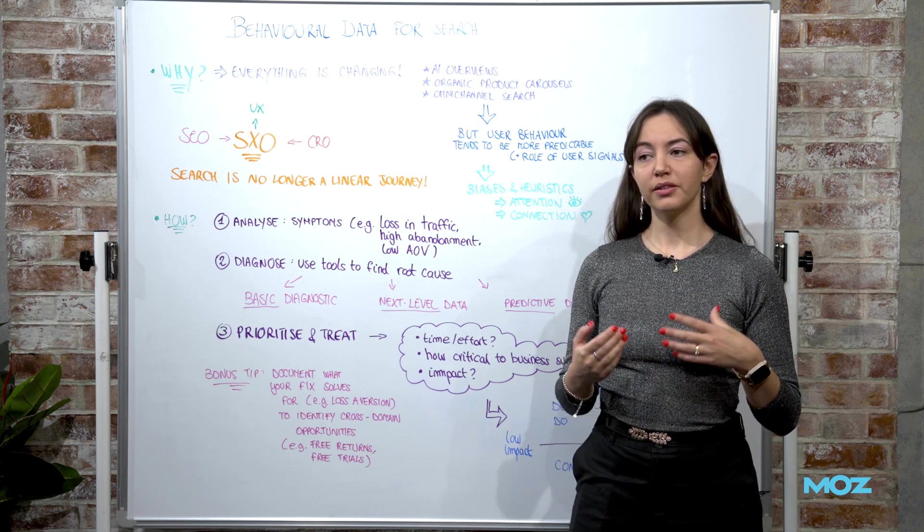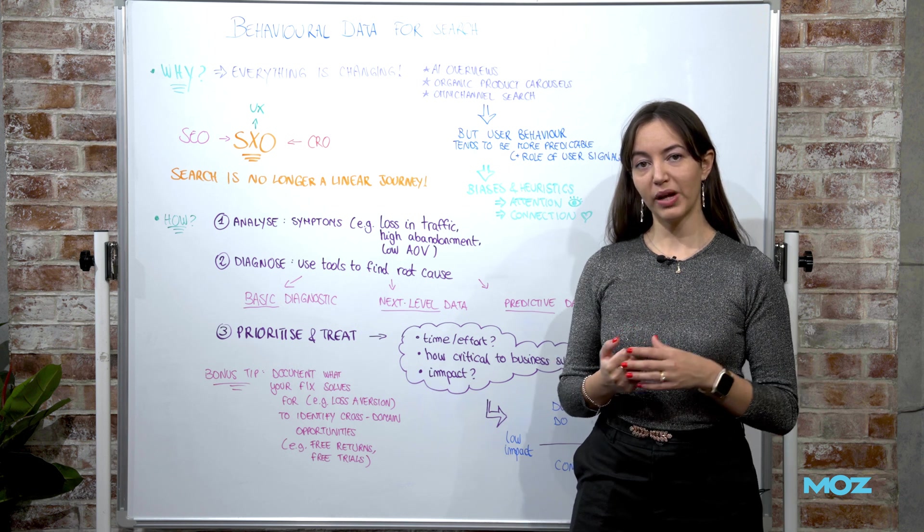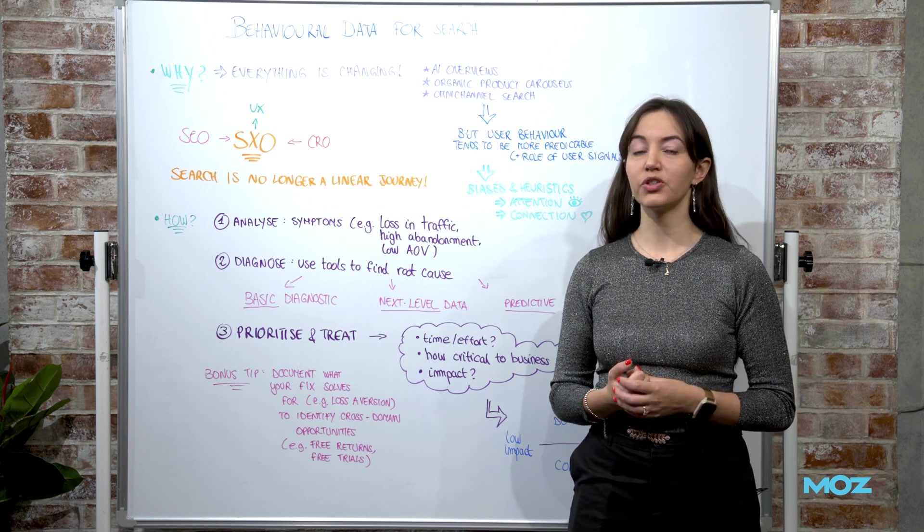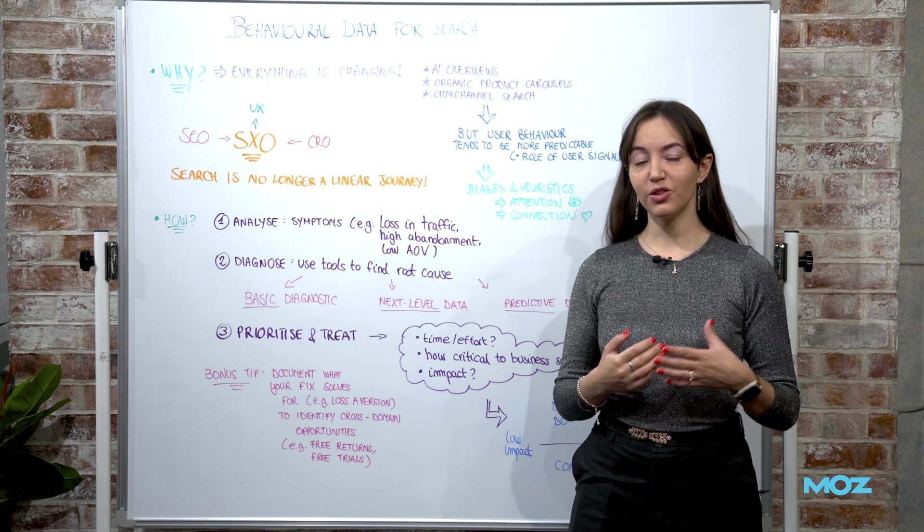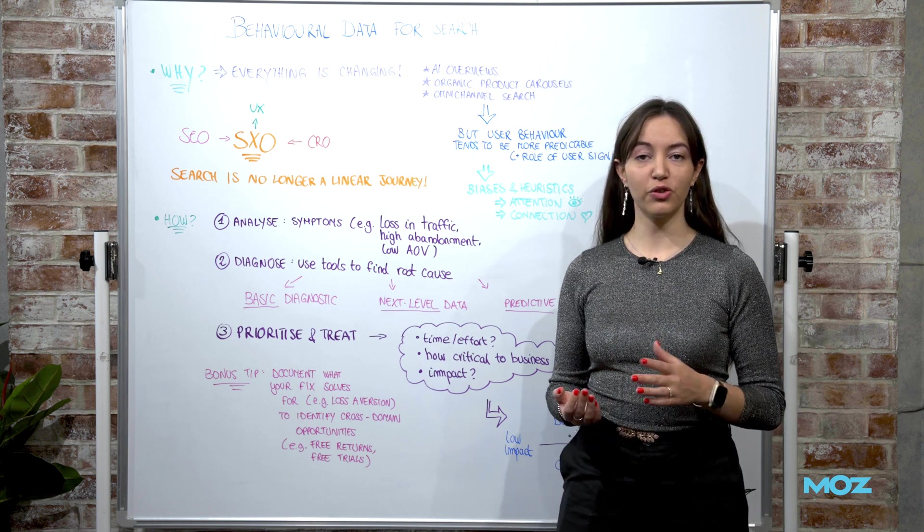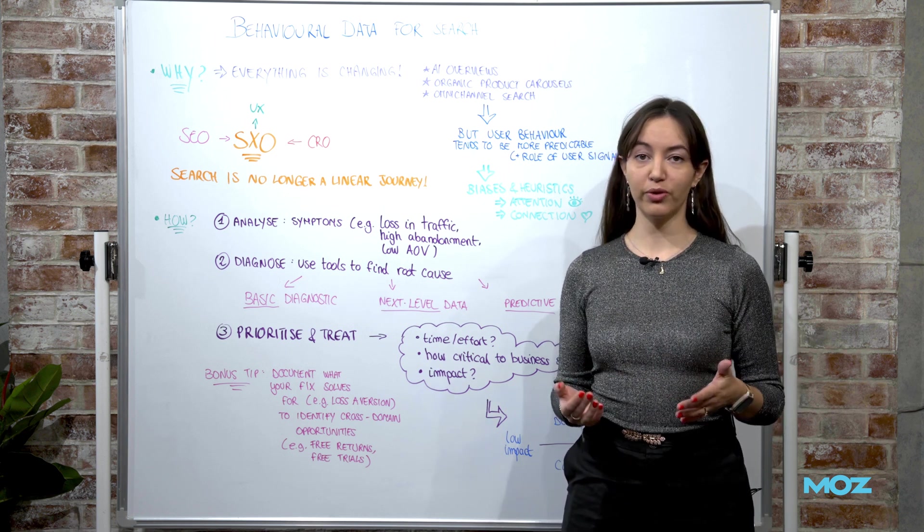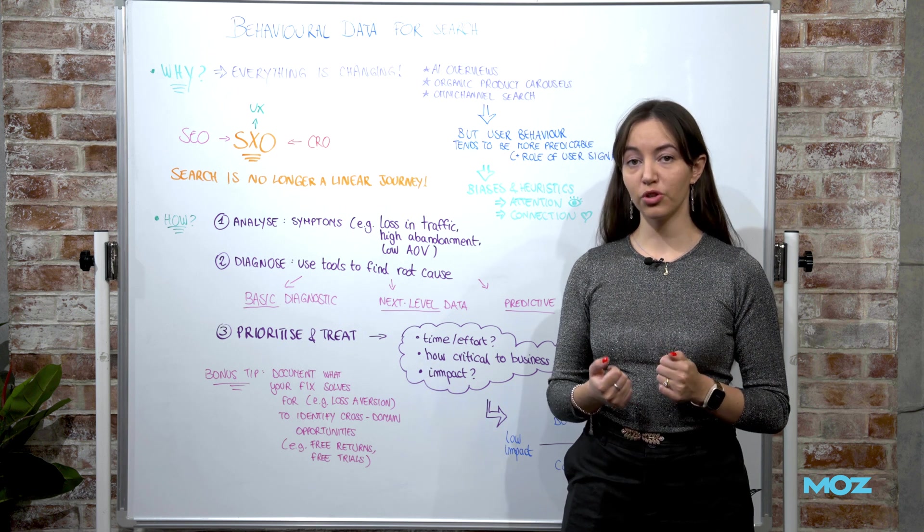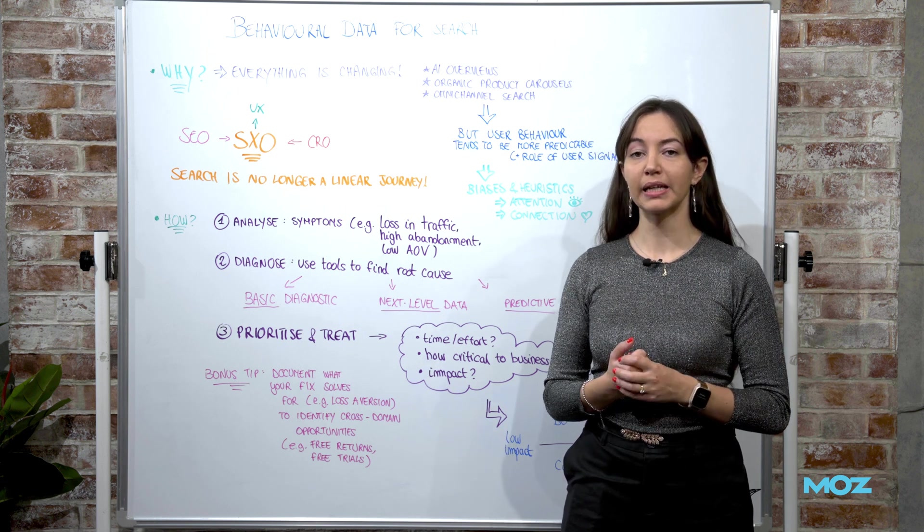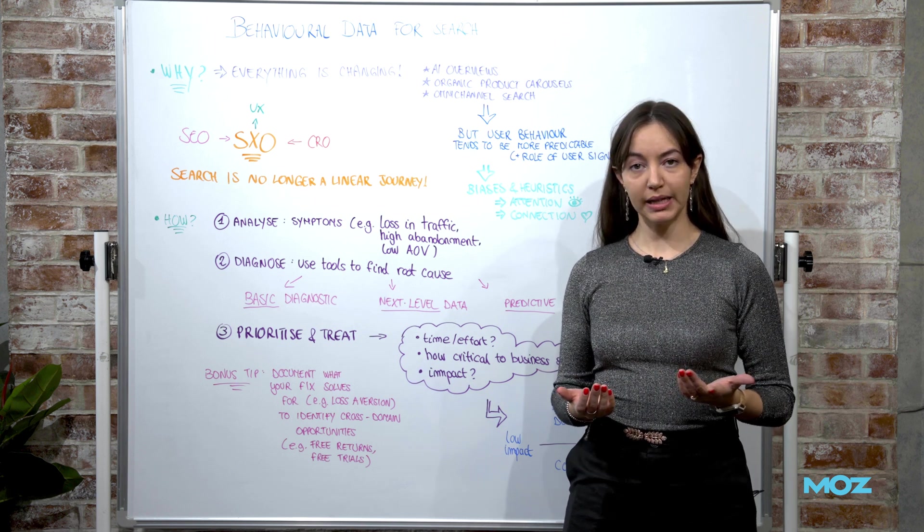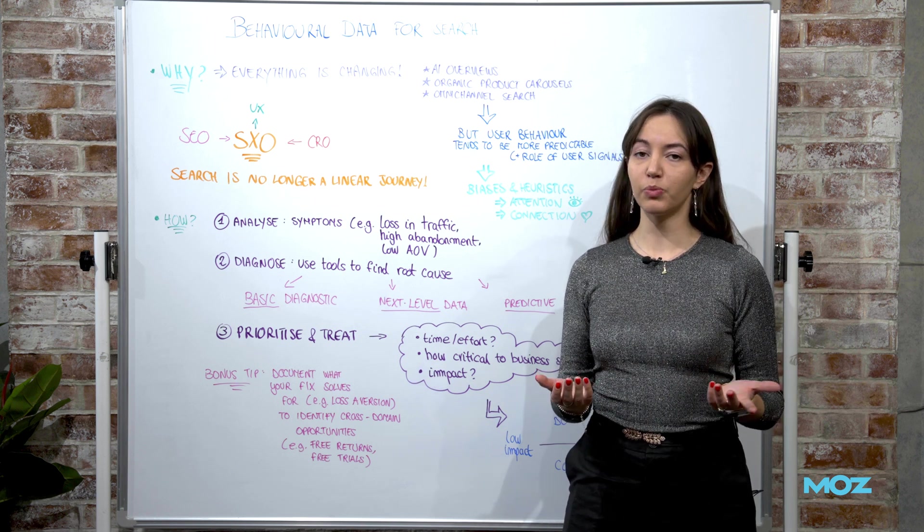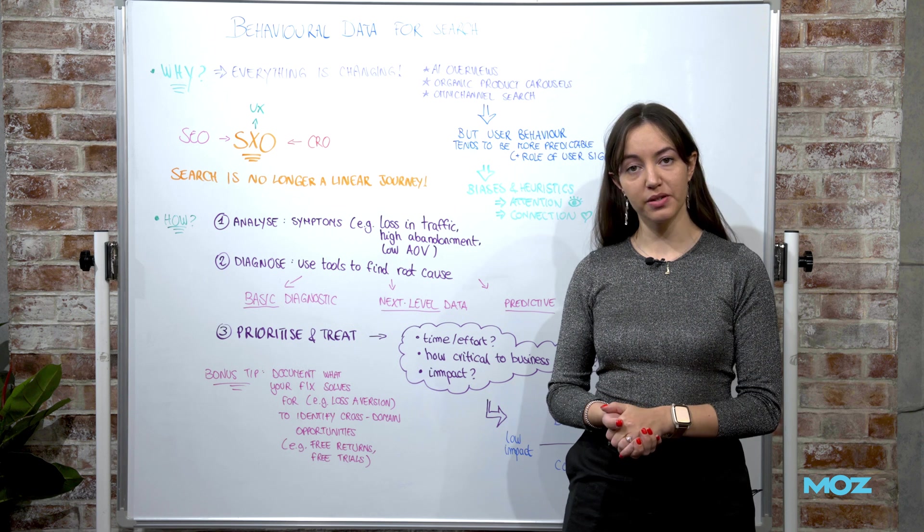So there's normally three steps that I go through when analyzing user behavior for search. The first one is exactly analyzing the symptoms. So this is normally the easiest step because you don't even need to look for anything. Symptoms will be brought to you by your leadership team most likely. These are normally the high-level losses that might be brought to your attention because they have a business impact.